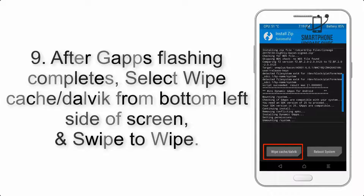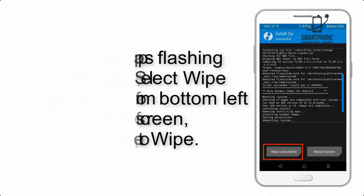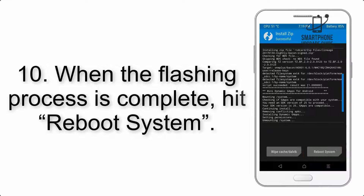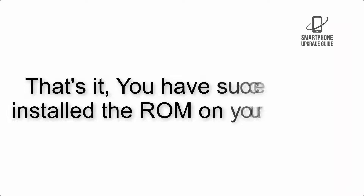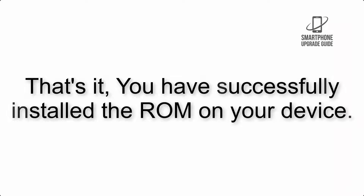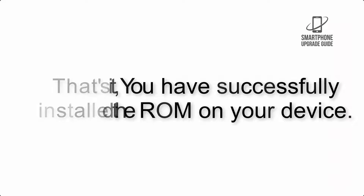Step 9: After GApps flashing completes, select Wipe Cache and Dalvik from the bottom left side of the screen and swipe to wipe. Step 10: When the flashing process is complete, hit Reboot System. That's it — you have successfully installed the ROM on your device.